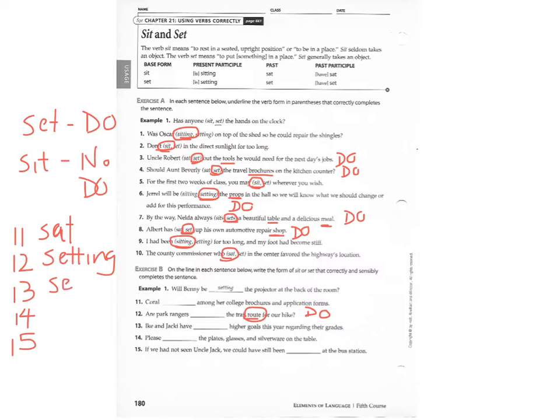For number 13, we're going to use set because we're going to have a direct object, that's going to be goals. For 14, we're going to use set again, and we're going to have a direct object again, and that's going to be plates, glasses, and silverware.